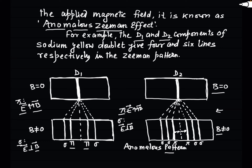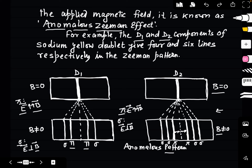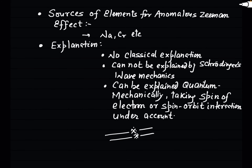So for sodium's D1 and D2 lines, we observe 4-component and 6-component patterns respectively in the presence of an external magnetic field. This is the anomalous Zeeman pattern, and the phenomenon is called the anomalous Zeeman effect. In this case, only the transverse Zeeman effect is typically observed.